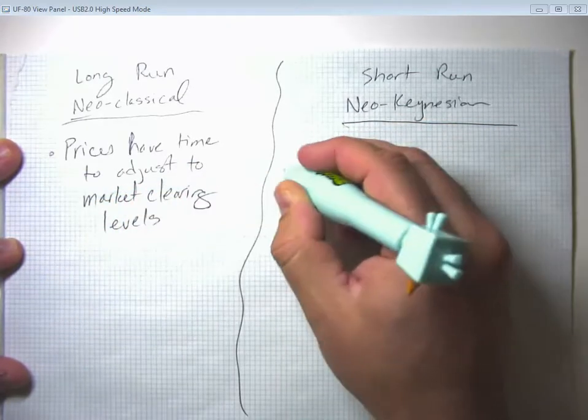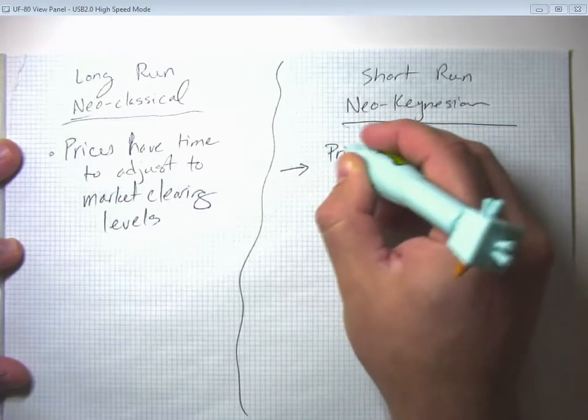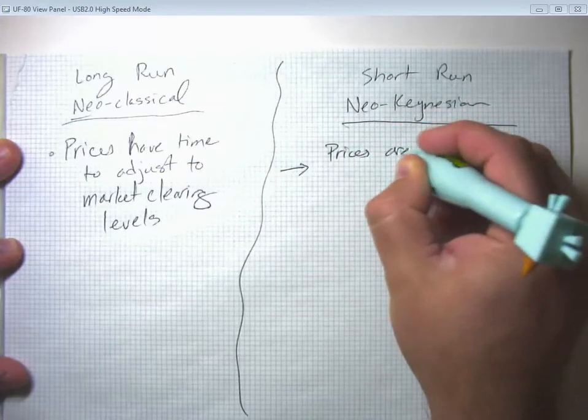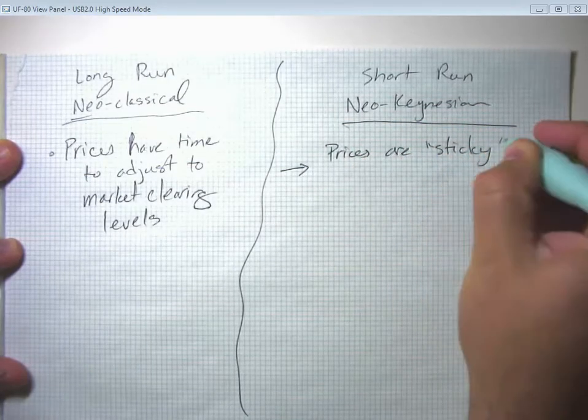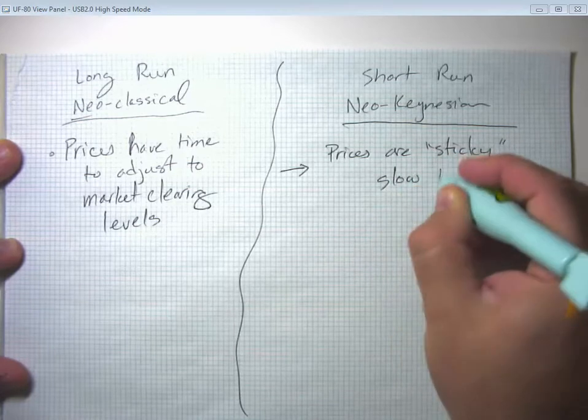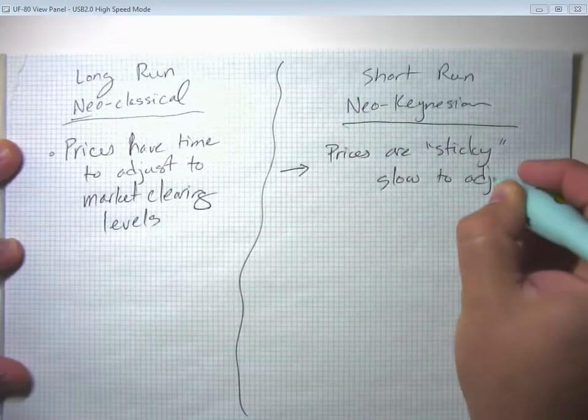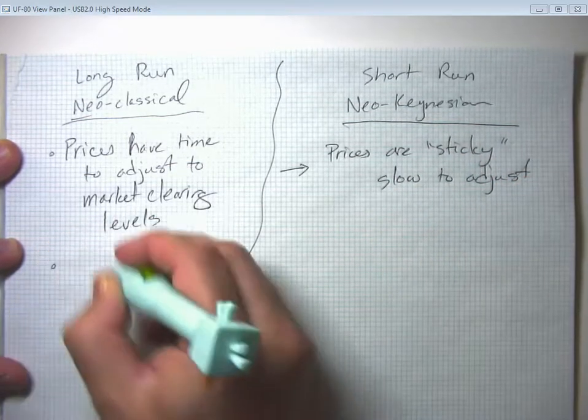But in the short run, prices are what we call sticky or slow to adjust.